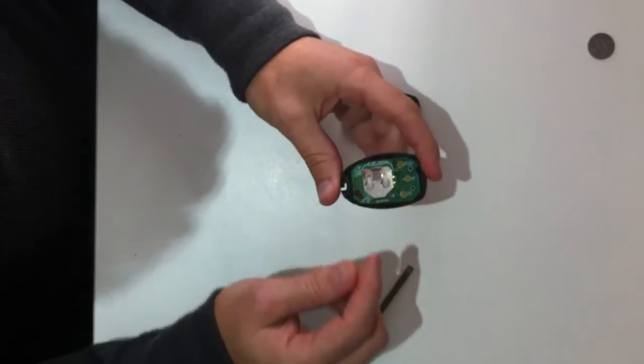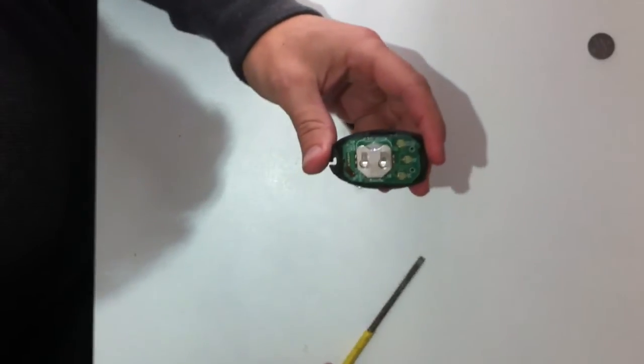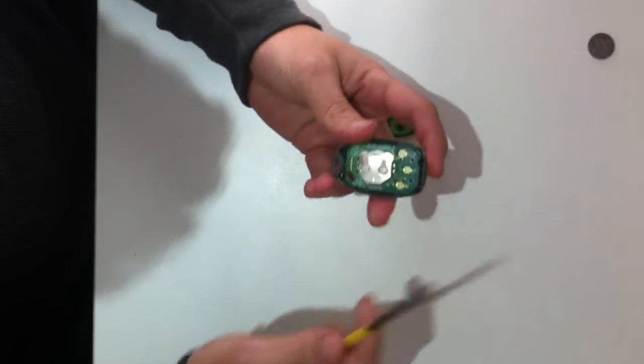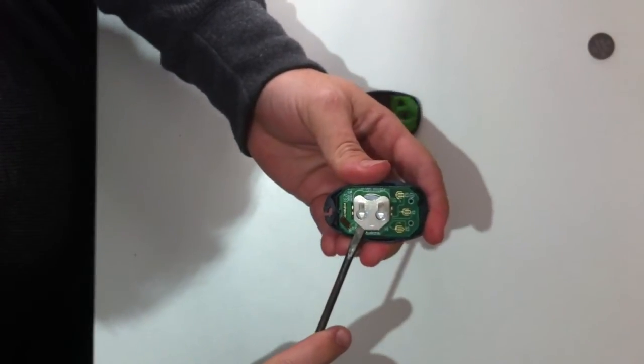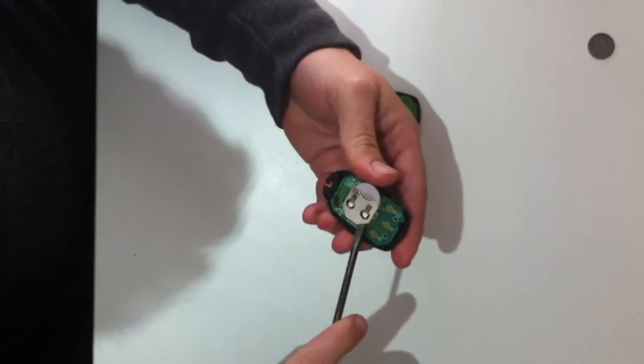So you want the bottom piece with the circuit board and where the battery is in this area here. Now again, sometimes it can be a bit fiddly, but with your screwdriver you can just push your battery out relatively easily.